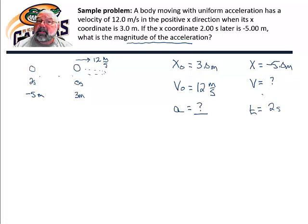And there's really only one that I know of. And that's the third kinematics equation, which is x equals x0 plus v0t plus 1 half acceleration times the time interval squared. And we're looking for the acceleration.